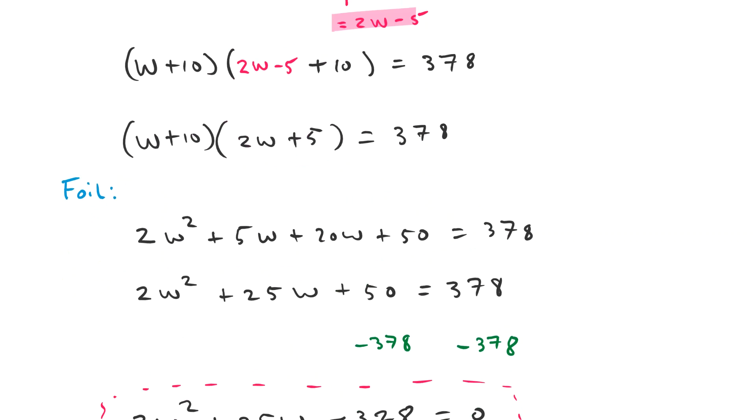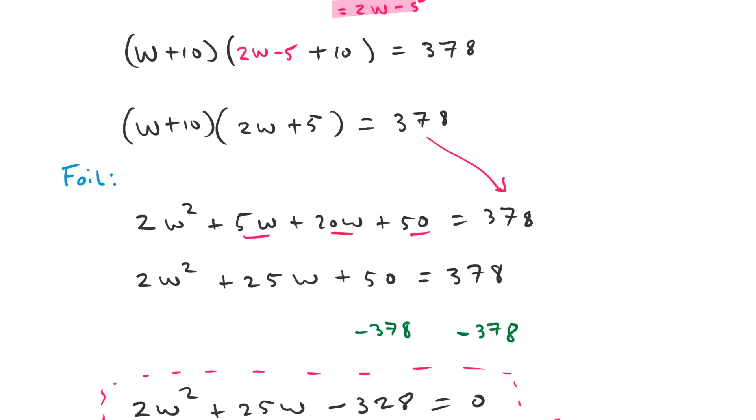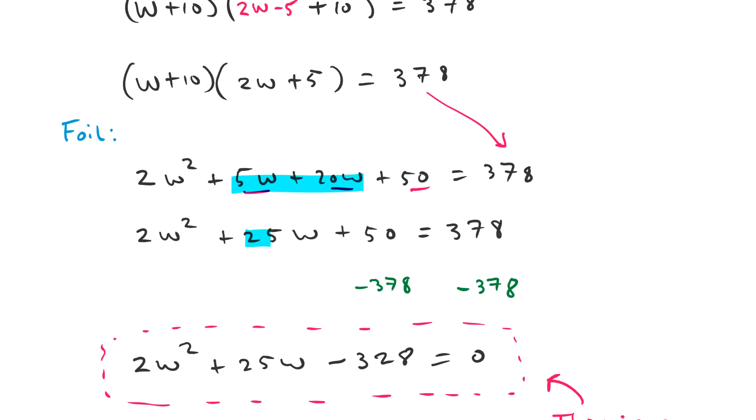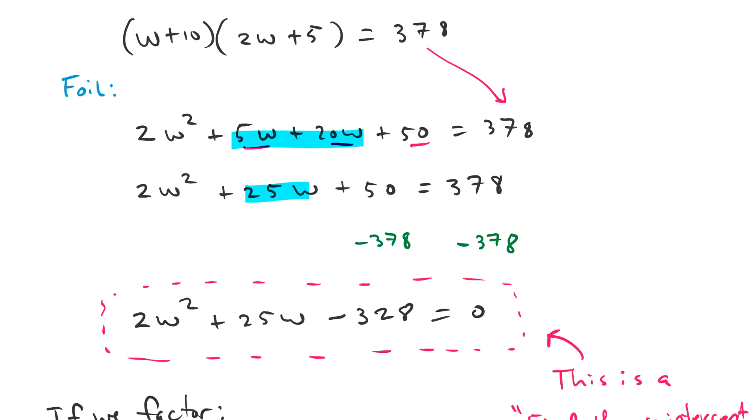So when we foil this, we get 2W squared plus 5W plus 20W plus 50, and then this 378 comes down. Adding the 5W and the 20W together gives us 25W. If we take the 378 over to the other side...